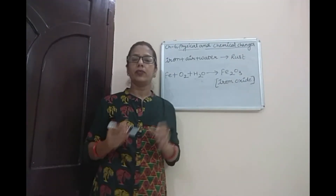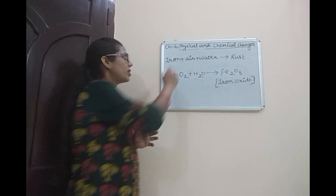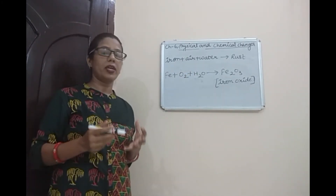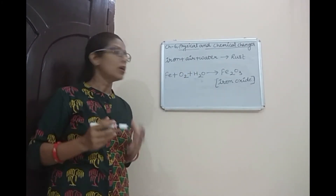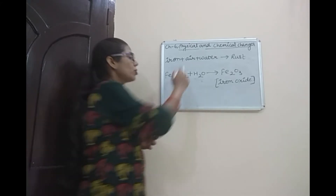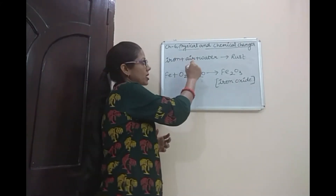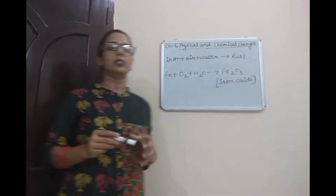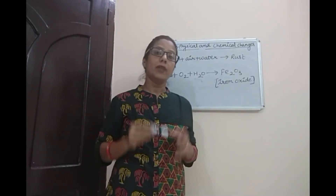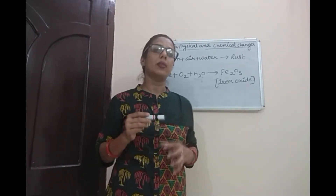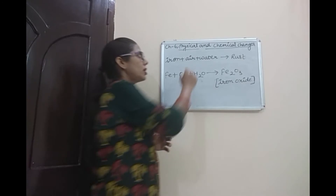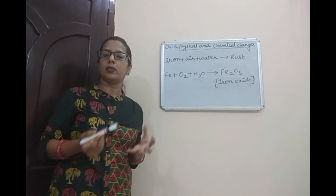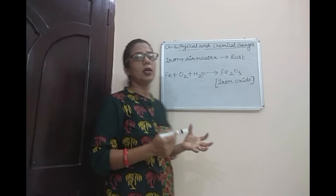Rusting means when an iron object comes in contact with air and water, rust will occur. We can see that both substances — air and water — are required for the rusting process. If either substance is absent in the environment, rusting will not occur.